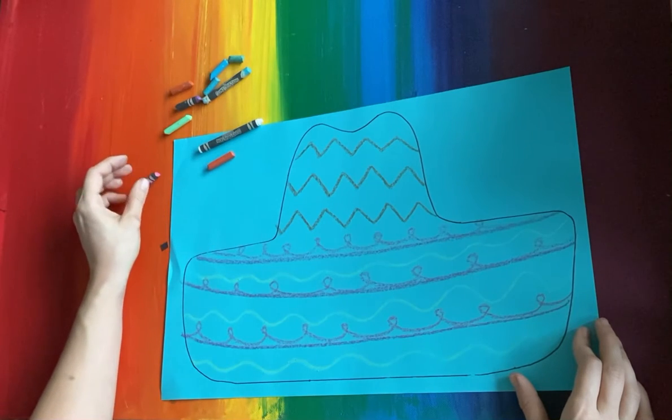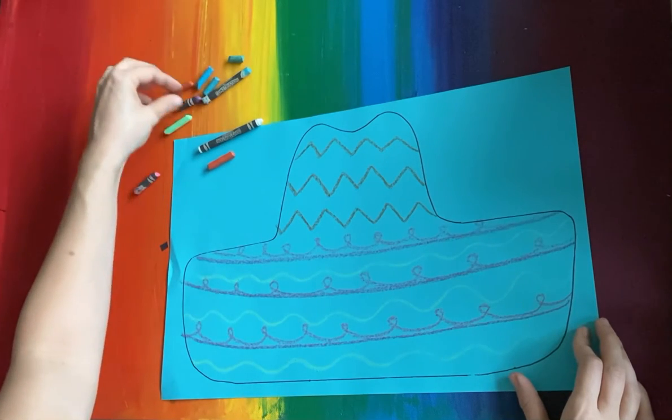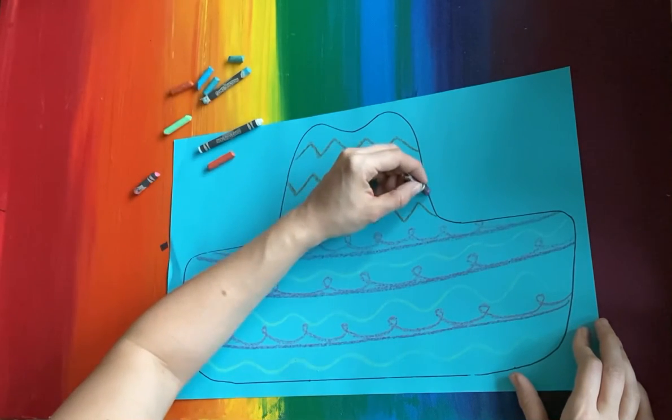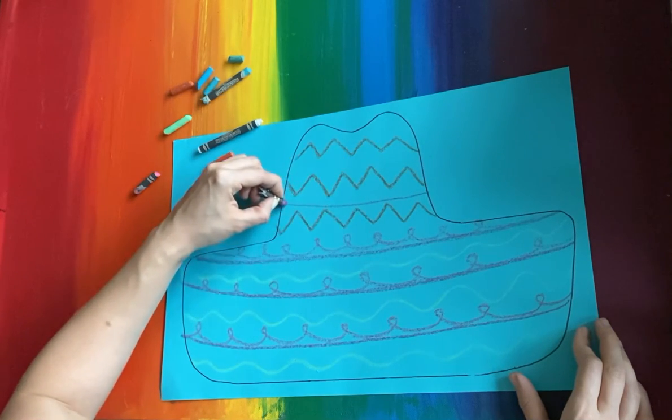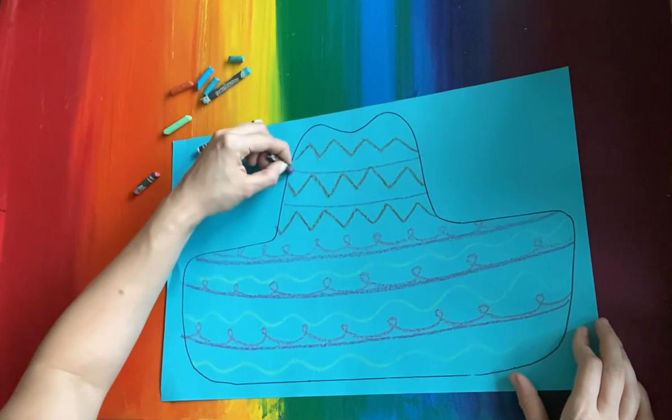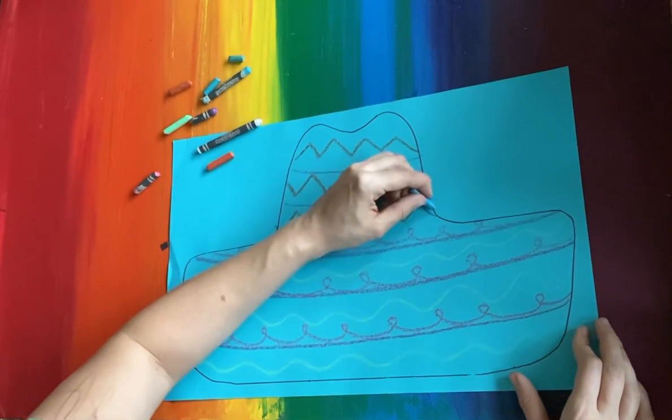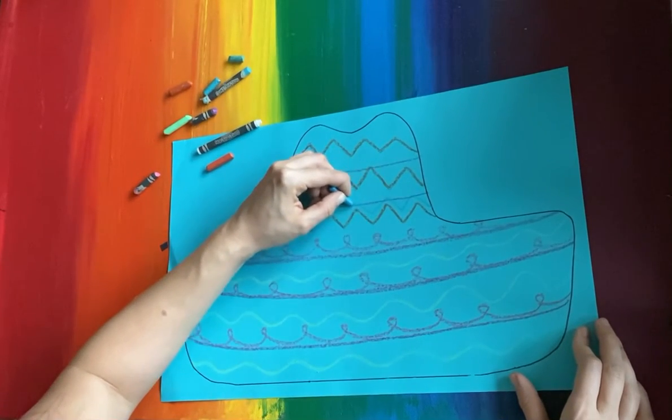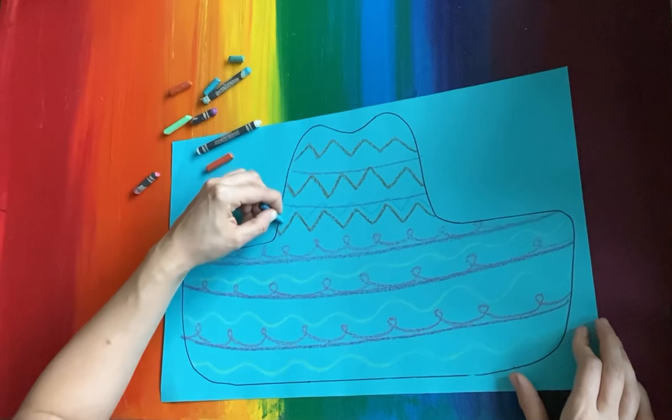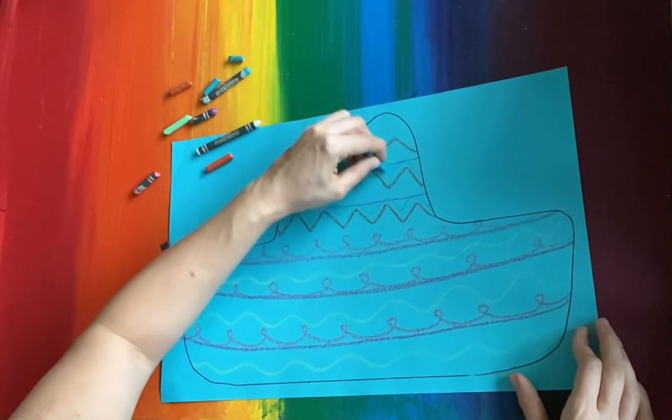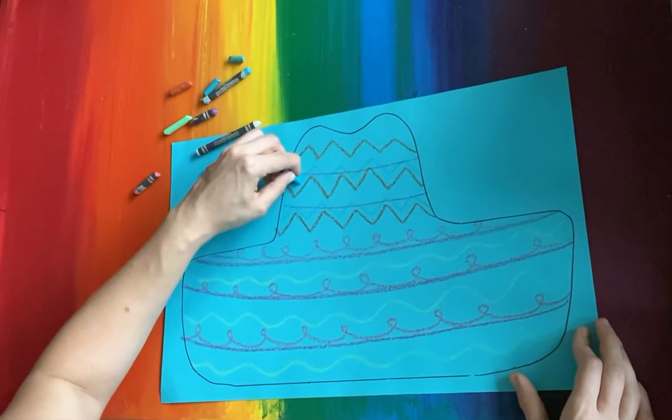We can even do more straight lines if we want. We can create more zigzags. See, this is a blue crayon on blue paper, but it's still showing up because it's a little bit different.